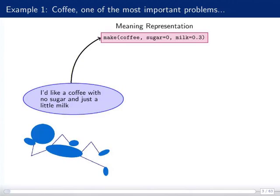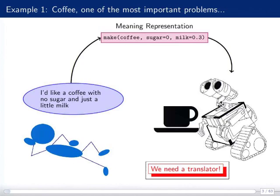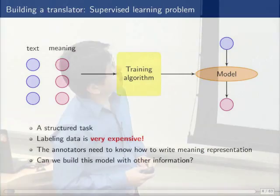As computer scientists, we all dream one day we can communicate with machines. For example, you ask a machine: I like a coffee with no sugar and just a little milk. One way to communicate with machines is if we can translate human requests into some meaning representations — for example, make_coffee, sugar=0, milk=0.3. Then the machine can understand your command and do something for you, like make a cup of coffee. We need a translator to help translate a human request into meaning representations.